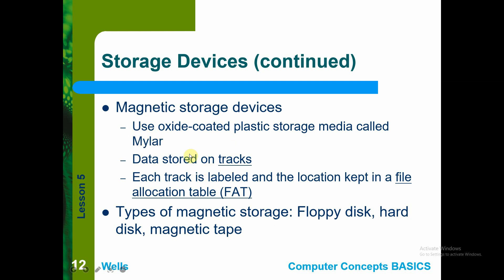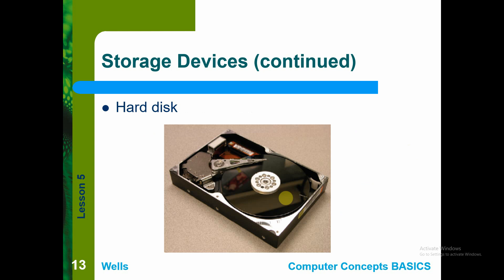Data is stored on tracks — that is how it retains memory of the data. Each track is labeled and the location is kept in a file allocation table. If you open a magnetic disk, you'll see that there are piled-up platters inside. The magnetic disk has stacked-up storage layers, a read pointer to access the data, and small ports with chips on a board for execution of instructions — taking data to and from your computer.